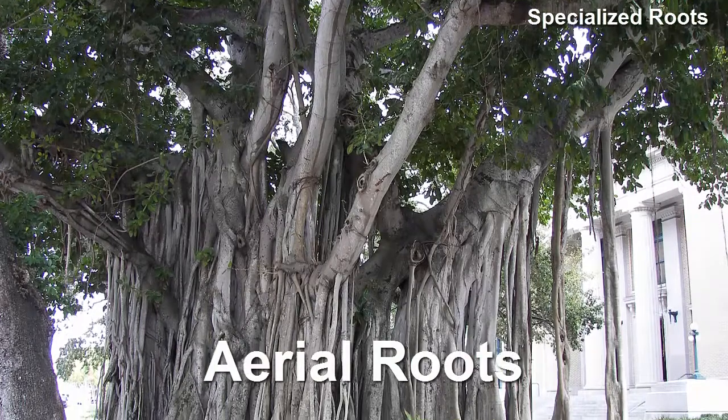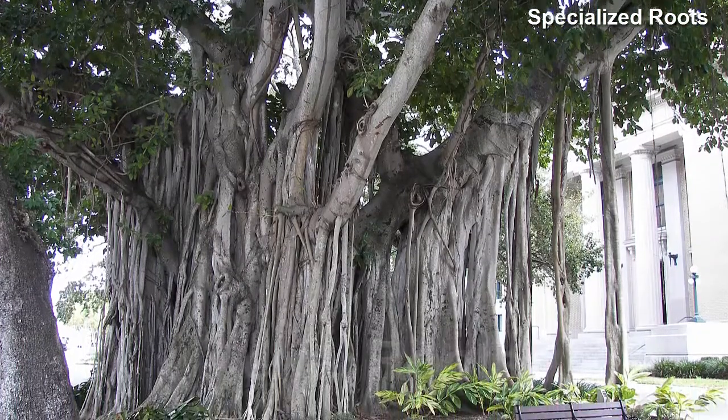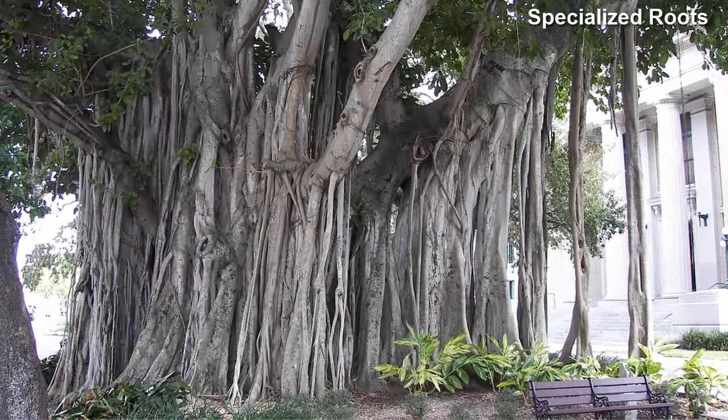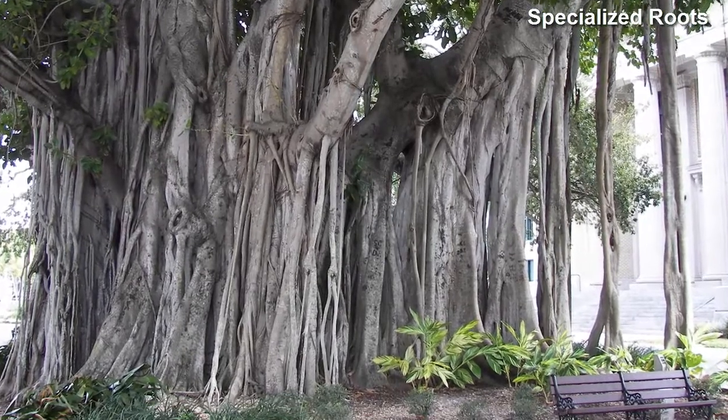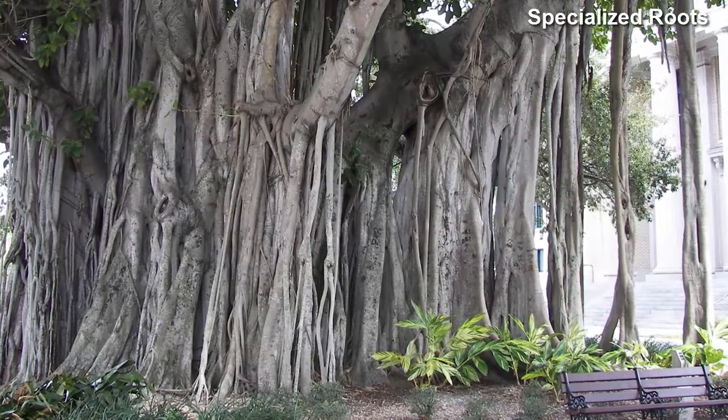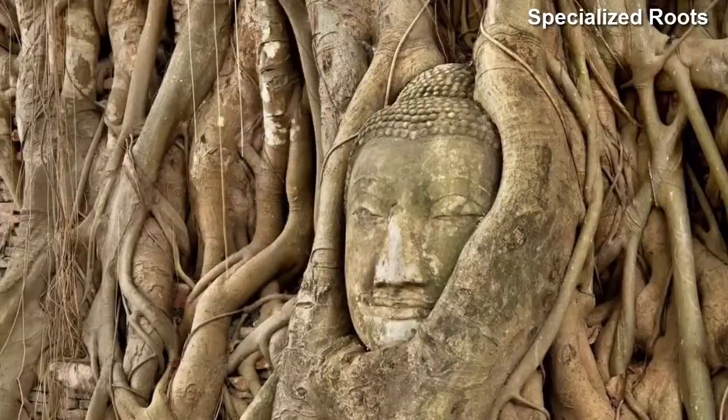This banyan tree produces aerial roots originating from the branches and dangles reaching the soil. This can then initiate secondary growth and create structures that look like secondary trunks.